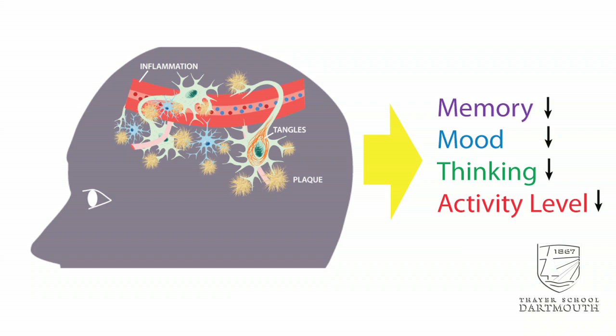In fact, profound alterations occur in the structure and function of cerebrovascular cells, glia, and the neurons that act as a neurovascular unit. These alterations promote the neuronal dysfunction that underlies cognitive decline in the changes in memory, mood, thinking, and activity level associated with the disease.